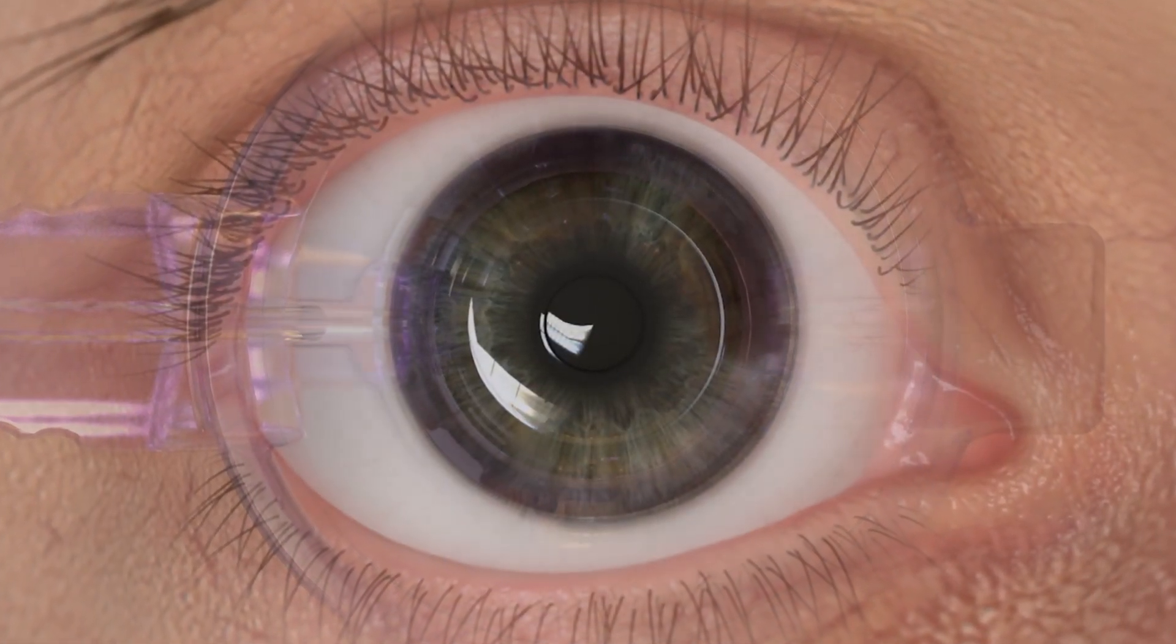The flap is created by first forming a tunnel to avoid an opaque bubble layer (OBL). The tunnel provides a path for the release of gas and water generated in the flap creation process.